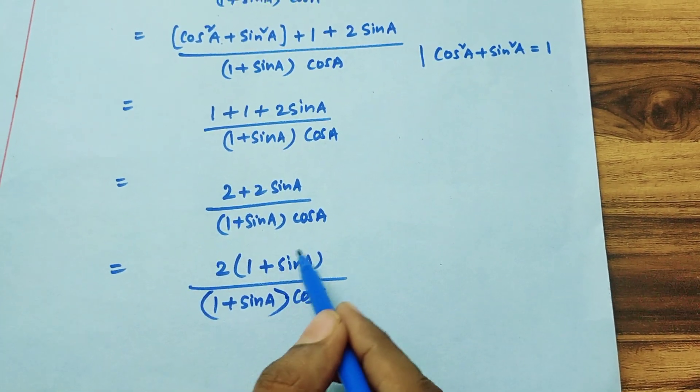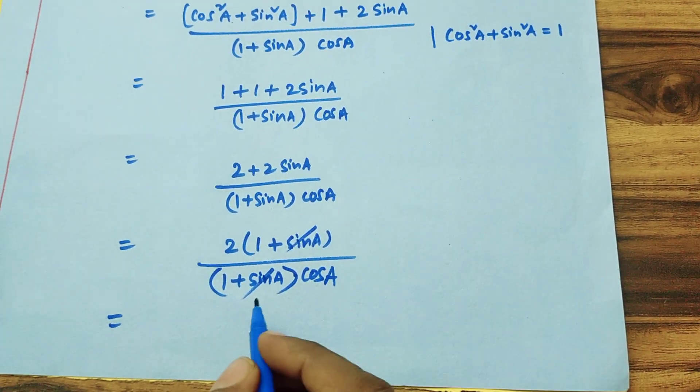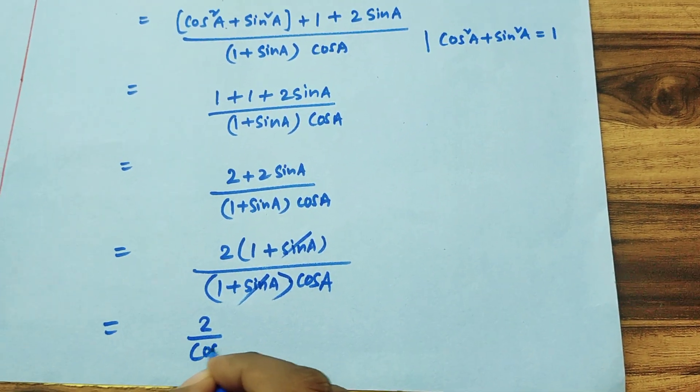These terms are common, so I am dividing it and I will get 1. This is equal to 2 by cos A.